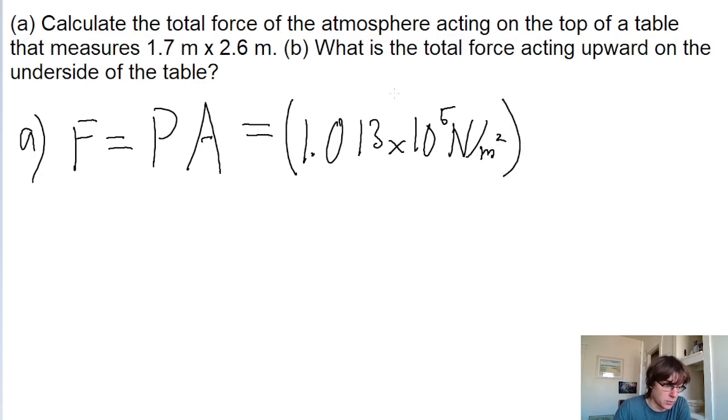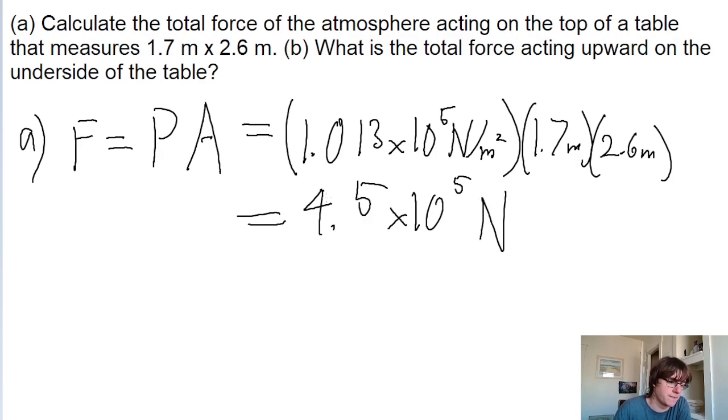We're given the dimensions as 1.7 meters by 2.6 meters. So we multiply by 1.7 meters times 2.6 meters. Put that into a calculator, and it's 4.5 × 10^5 newtons. That's the answer to part A.